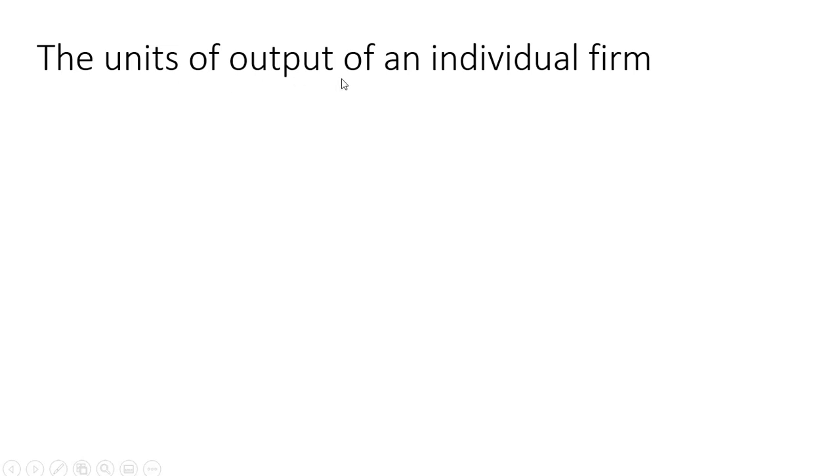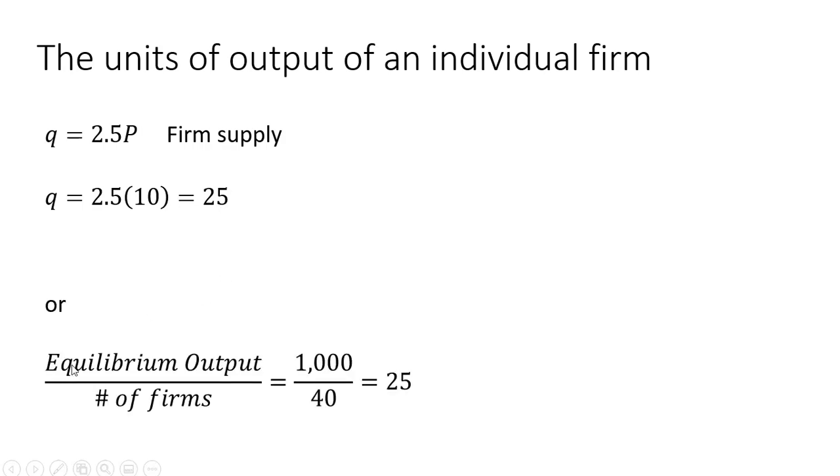The units of output of an individual firm in this market. So we have the individual firm supply equation, and we found that the equilibrium price is $10. So that implies that each firm will produce 25 units. Another way of backing into this answer is we could take the equilibrium output in this market, which we found is 1,000, and divided by the number of firms in this market, which we said is 40. That's another way of backing into how much output the individual firm will produce in this market. Each one will produce 25 units.